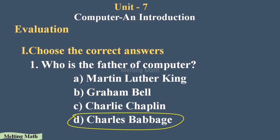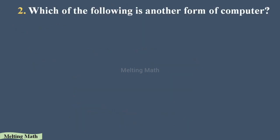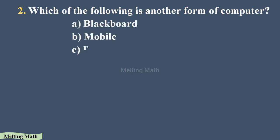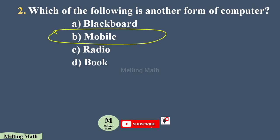The second question: which of the following is another form of computer? The options are blackboard, mobile, radio, or book. Mobile is another form of computer. Mobile, tablets, and laptops are all other forms of computers.